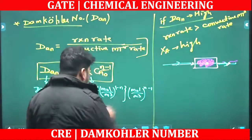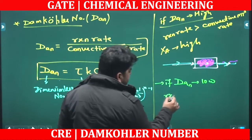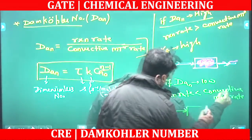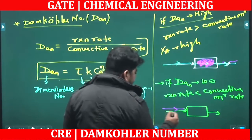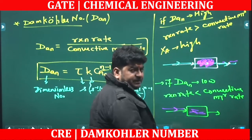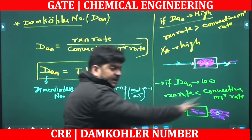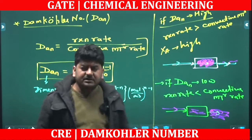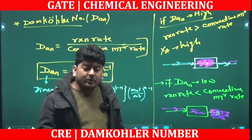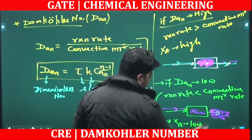Similarly, if the Damköhler number is low, it means the reaction rate is smaller than the convective mass transfer rate. In the reactor, very few molecules remain to participate in the reaction, and most molecules appear at the outlet. Convection dominates — mass transfer occurs — so the rate of reaction is low, most molecules cannot participate in the reaction, and thus the conversion will be low.